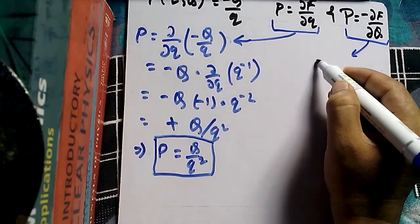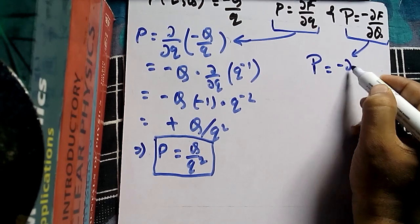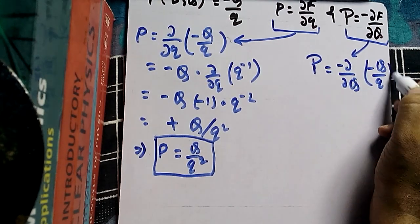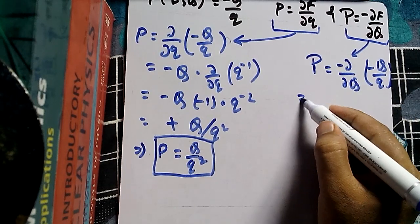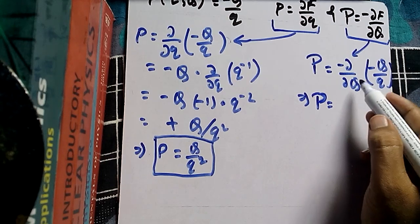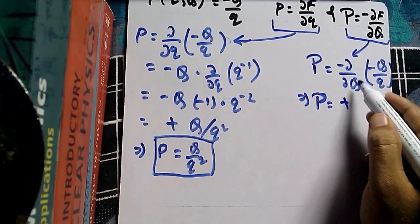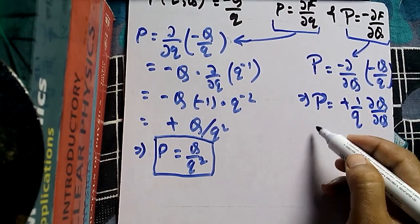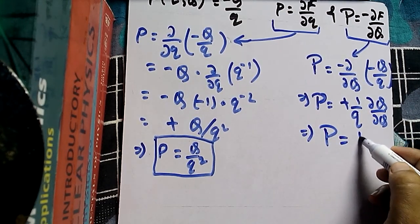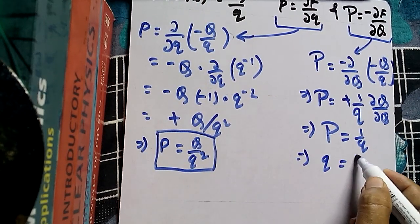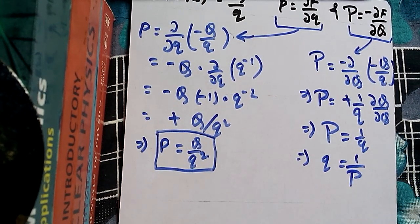From the second formula, capital P equals minus del by del capital Q of (capital Q divided by small q). Since 1 by small q is constant, differentiating gives capital P equals minus 1 by small q, so small q equals minus 1 by capital P — giving us small q in terms of the new coordinate capital P.